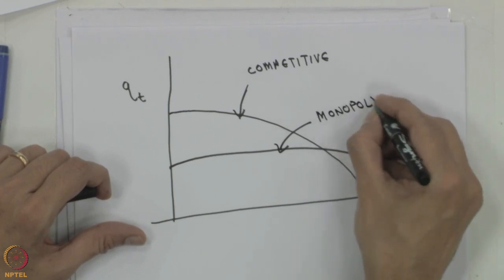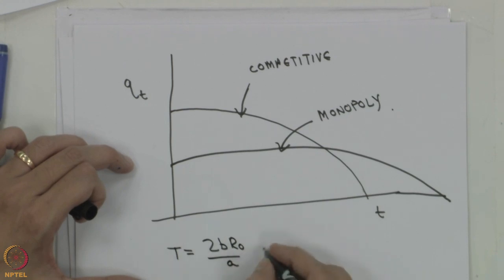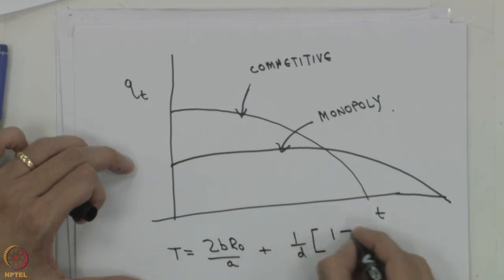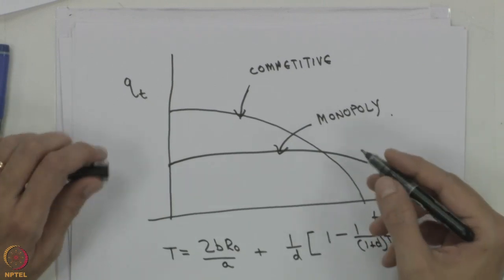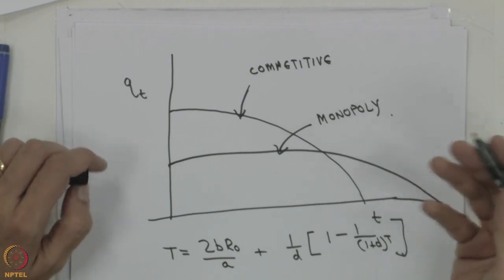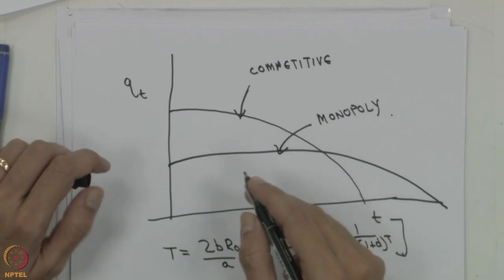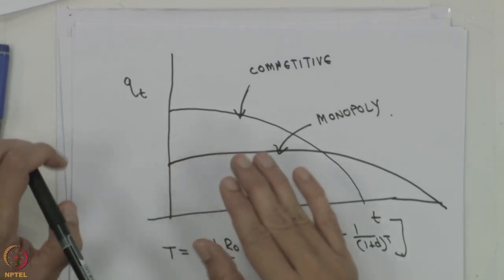Qualitatively, the time taken would be more. The time for the monopoly case would be based on 2 times B times R0 divided by A, compared to the earlier competitive case. If it were calculated, instead of 13 years you would get something like 20 years. Because the monopoly has an incentive to charge a higher price by releasing less into the market, its overall revenue is more. In the process, of course, the utility of consumers is affected.